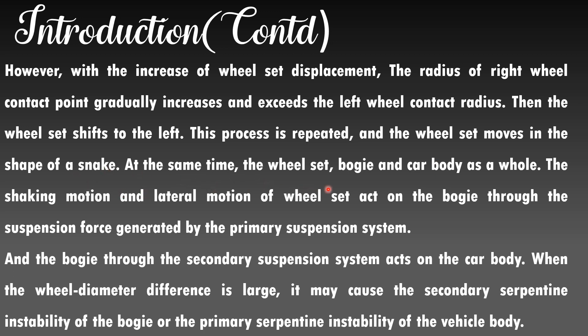At the same time, the wheel set affects the bogie and car body as a whole. The shaking motion and lateral motion of the wheel set act on the bogie through the suspension force generated by the primary suspension system, and the bogie through the secondary suspension system acts on the car body. When the wheel diameter difference is large, it may cause secondary serpentine instability of the bogie or primary serpentine instability of the vehicle body.